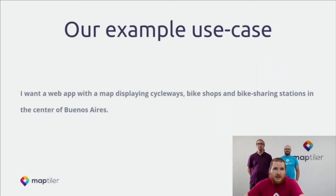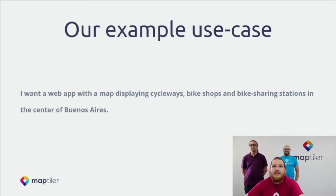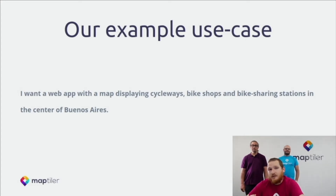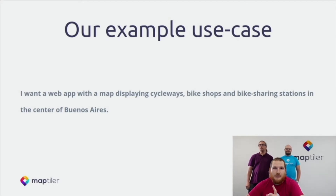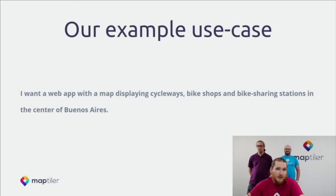What will be our use case? Let's say that I'm a bike enthusiast. I'm at the FOSS4G conference in Buenos Aires and I want a web app that displays cycleways in the center of Buenos Aires. But because I have a really old bike, there is a pretty high chance that my bike breaks down and I will need to repair it or maybe even use a shared bike. That's why I want to add some points of interest — bike shops and bike sharing stations. And because I am super lazy, I want to know how far these points are from the nearest cycleway. I will show you both a simple and an advanced solution.